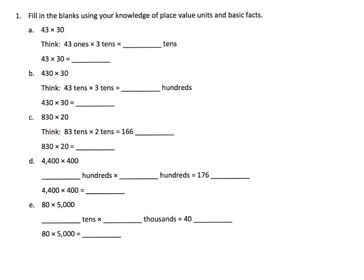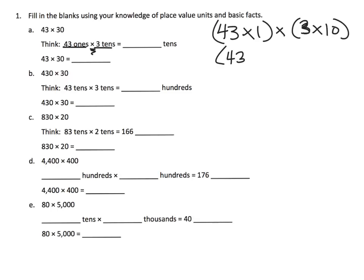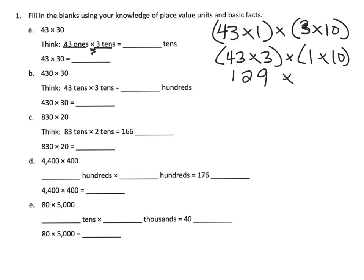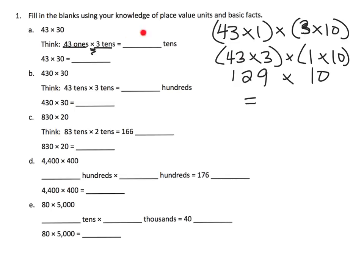We can use the commutative property and the associative property to rearrange this to be 43 times 3 times 1 times 10. Now 43 times 3 is 129, and 1 times 10 is 10. From the previous module we know 129 times 10 is 1,290. So 43 ones times 3 tens equals 129 tens, which equals 1,290.